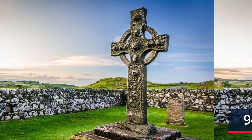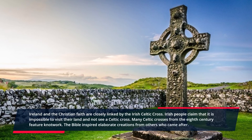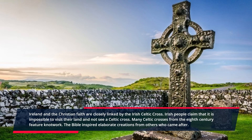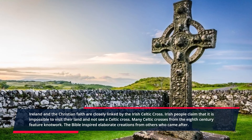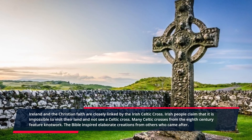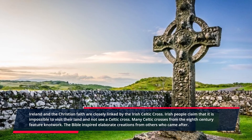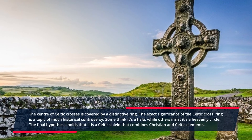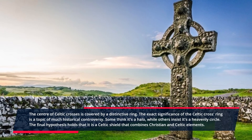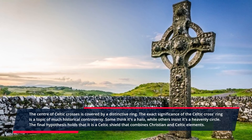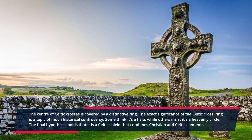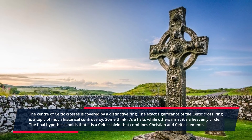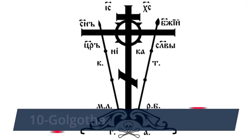Number nine: the Celtic Cross. Ireland and the Christian faith are closely linked by the Irish Celtic Cross. Irish people claim that it is impossible to visit their land and not see a Celtic Cross. Many Celtic crosses from the 8th century feature knotwork, while others feature elaborate Bible-inspired creations. The center of Celtic crosses is covered by a distinctive ring, the exact significance of which is historically debated — some think it is a halo, others a heavenly circle, and others a Celtic shield combining Christian and Celtic elements.